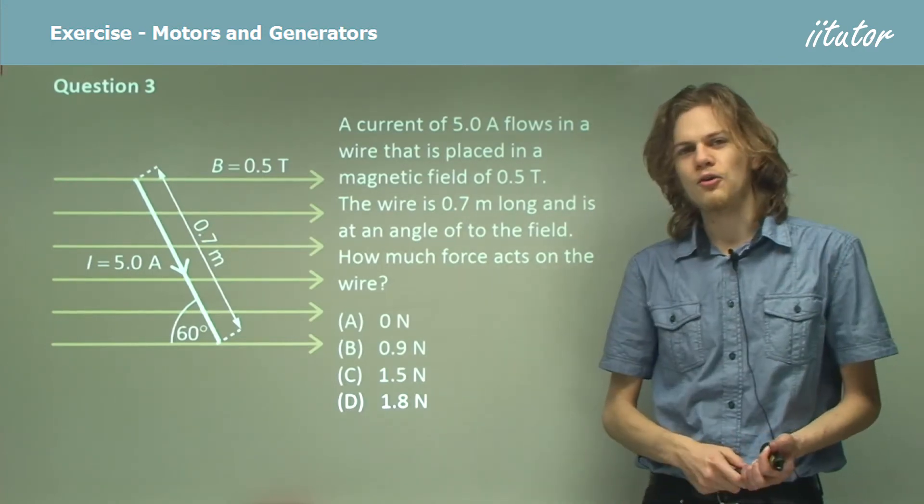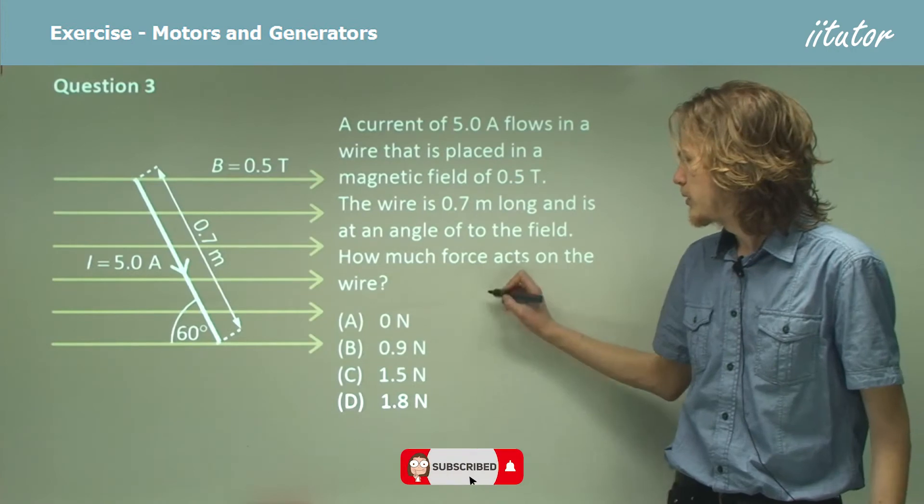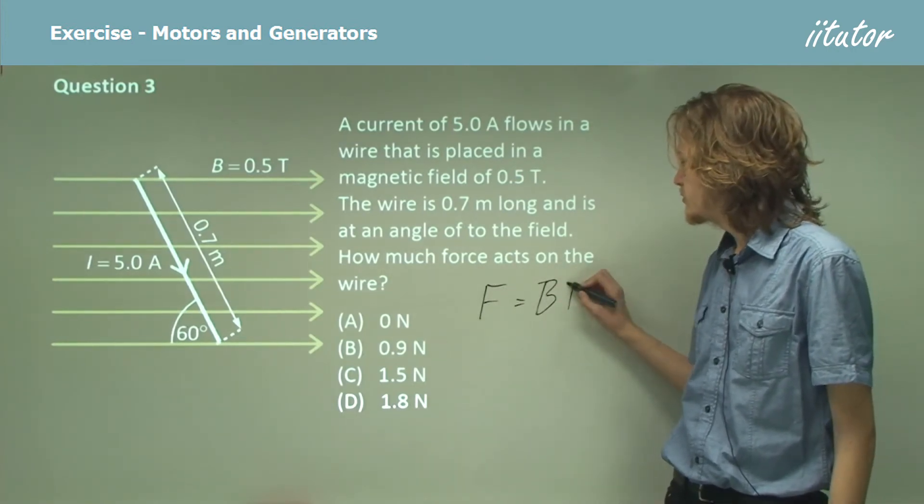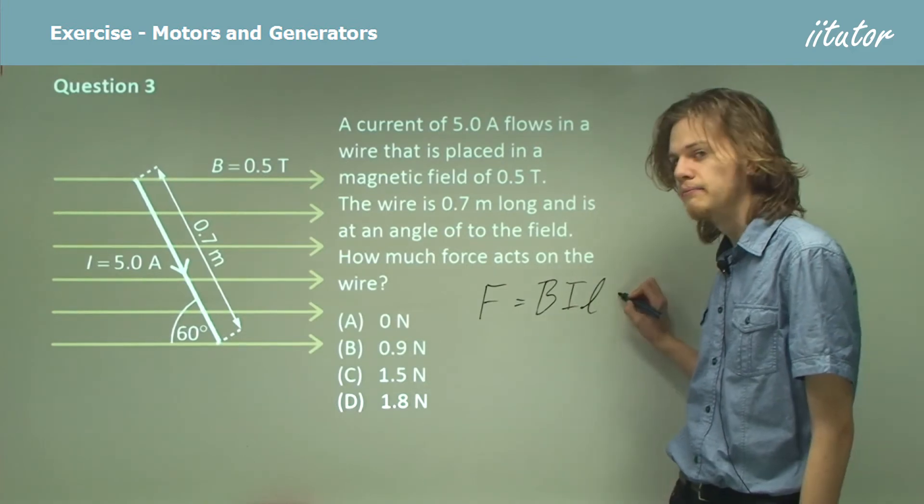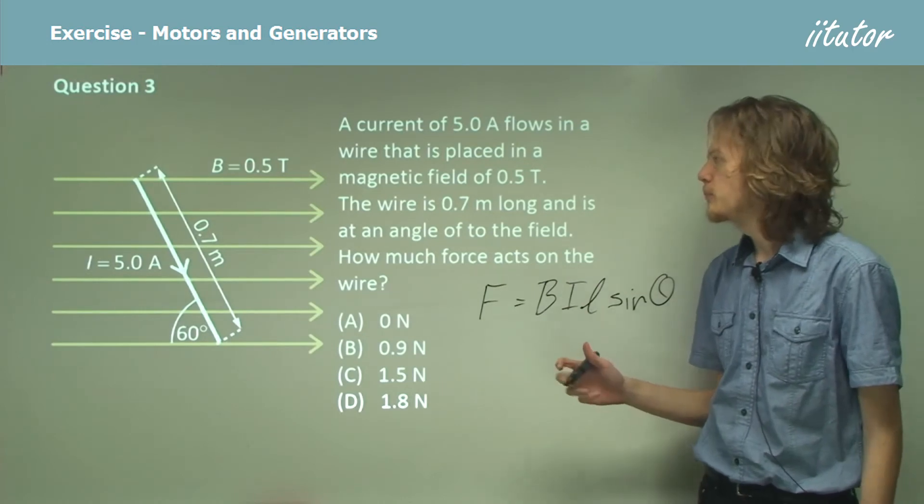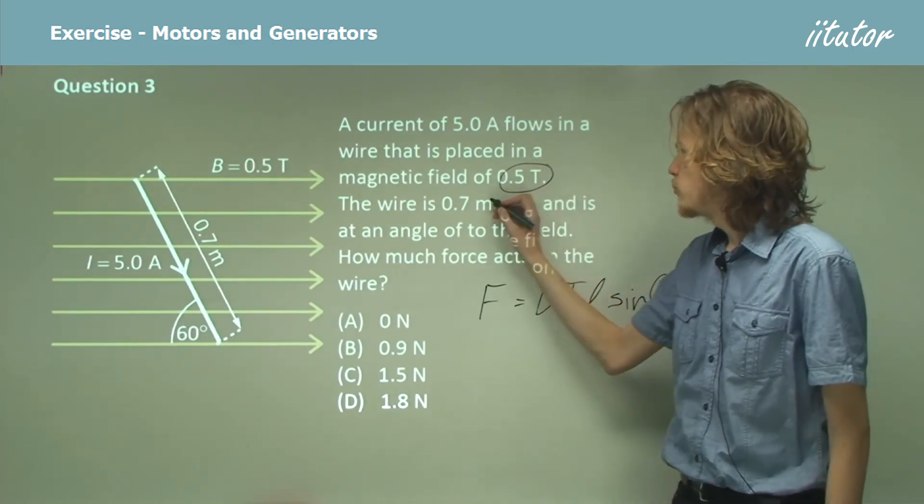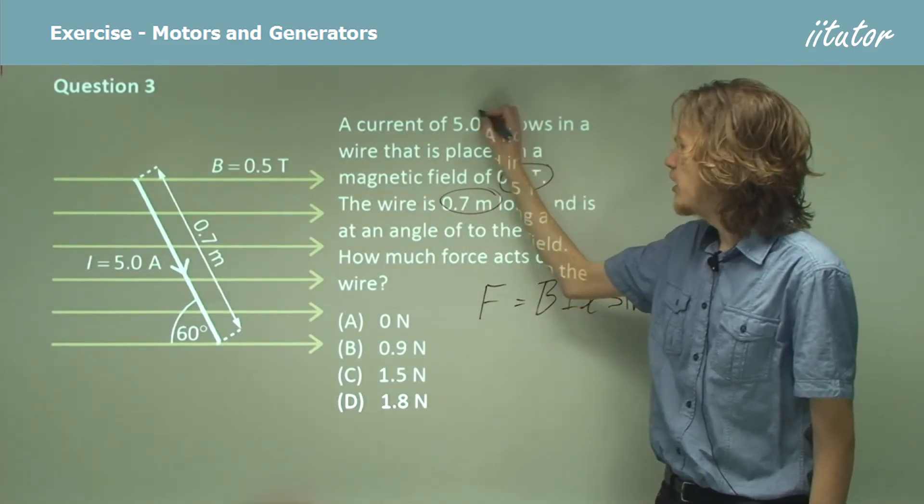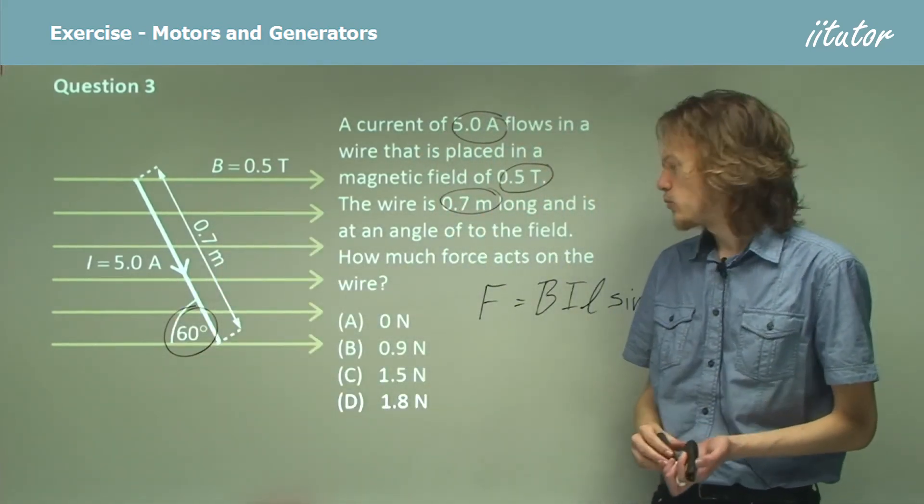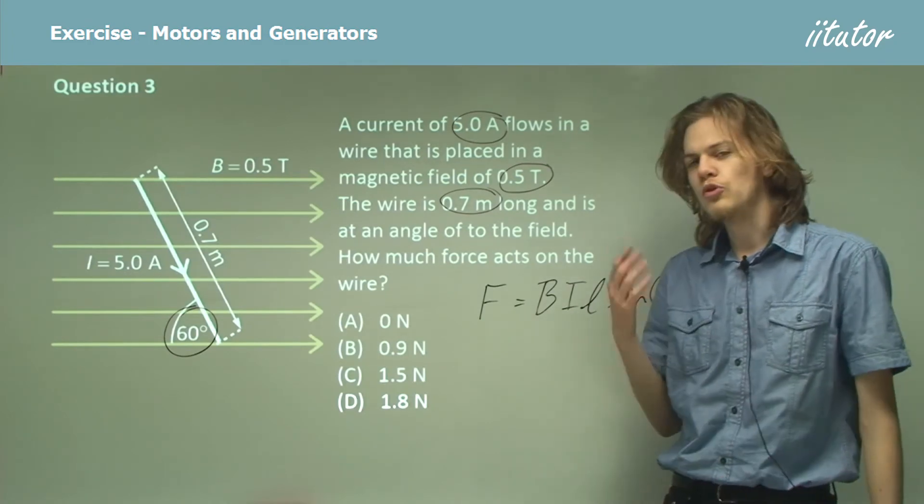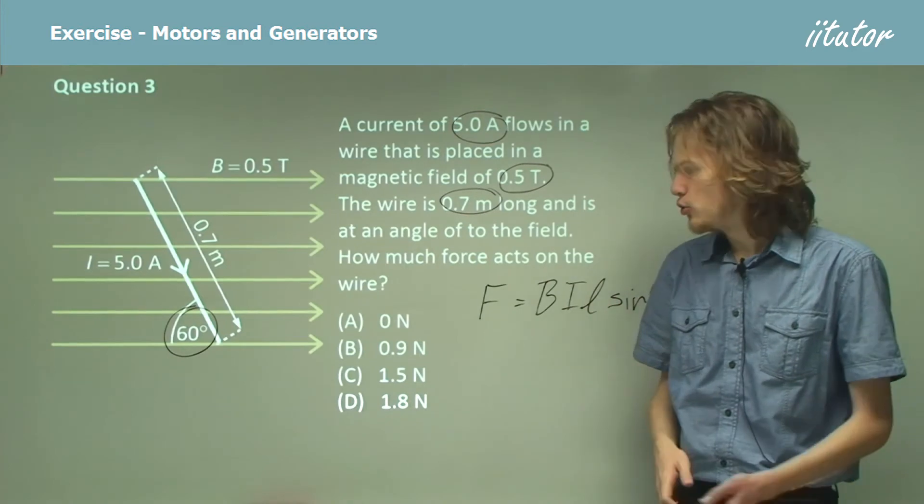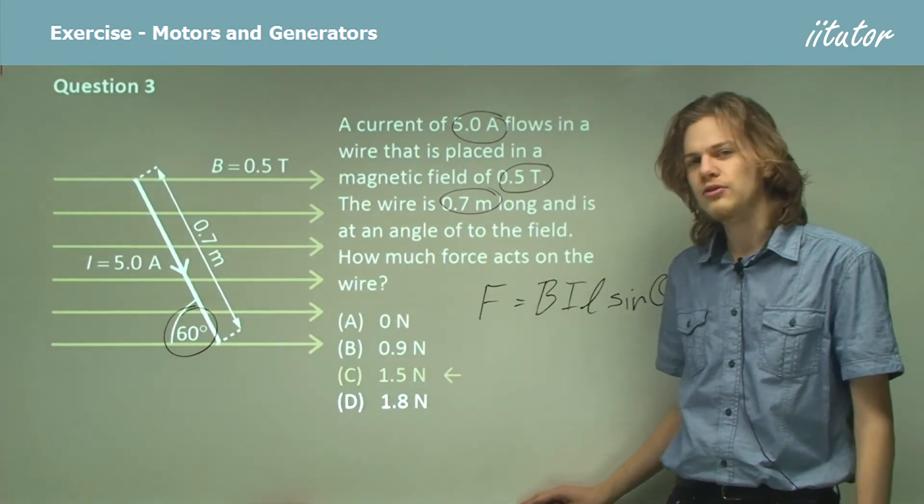So in this case, we want to use our equation for force in a magnetic field. That's F equals BIL sine theta. And in fact, we have all of these values in the question. We have B, we have L, we have I, and we have theta. So by substituting all of these in the equation, we'll end up with a mathematical expression that we can evaluate with a calculator. And that will evaluate to 1.5 newtons.